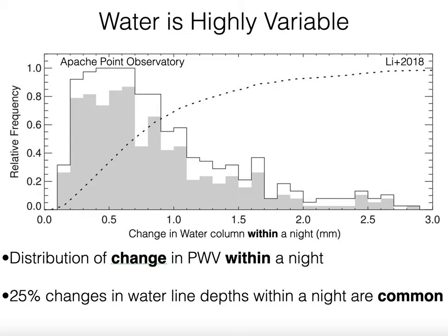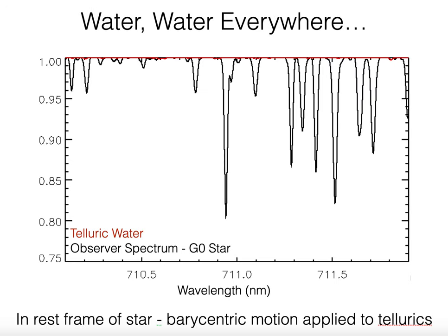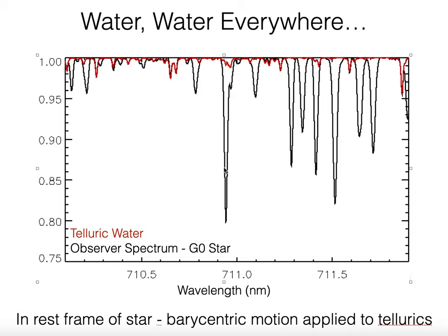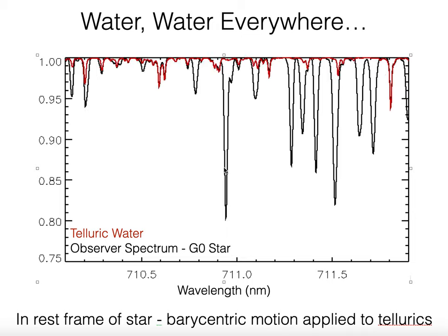What does that mean? It means that roughly 25% changes in water vapor line depths within a night are going to be very, very common. We're observing a star at high spectral resolution through Earth's atmosphere, hoping to measure infinitesimally small shifts in the centroids of those lines. Because Earth moves around the Sun, the positions of the stellar lines are moving relative to the telluric lines, and at the same time those telluric lines are changing in depth—resulting in a very complicated mixing that can easily lead to biased radial velocity measurements.